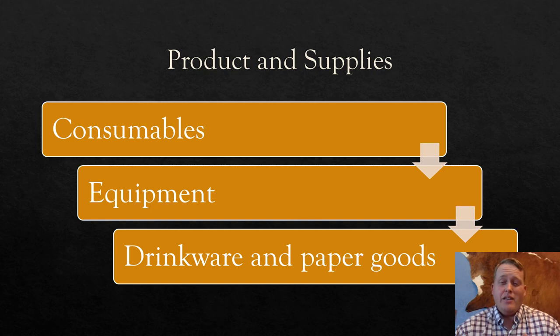Pretty much anything you can think of that you might need, you should probably go ahead and get it because you're probably going to use it. Then you jump down to drinkware and paper goods. So me and my wife, we're actually in the process of making a coffee trailer, starting our own coffee business.